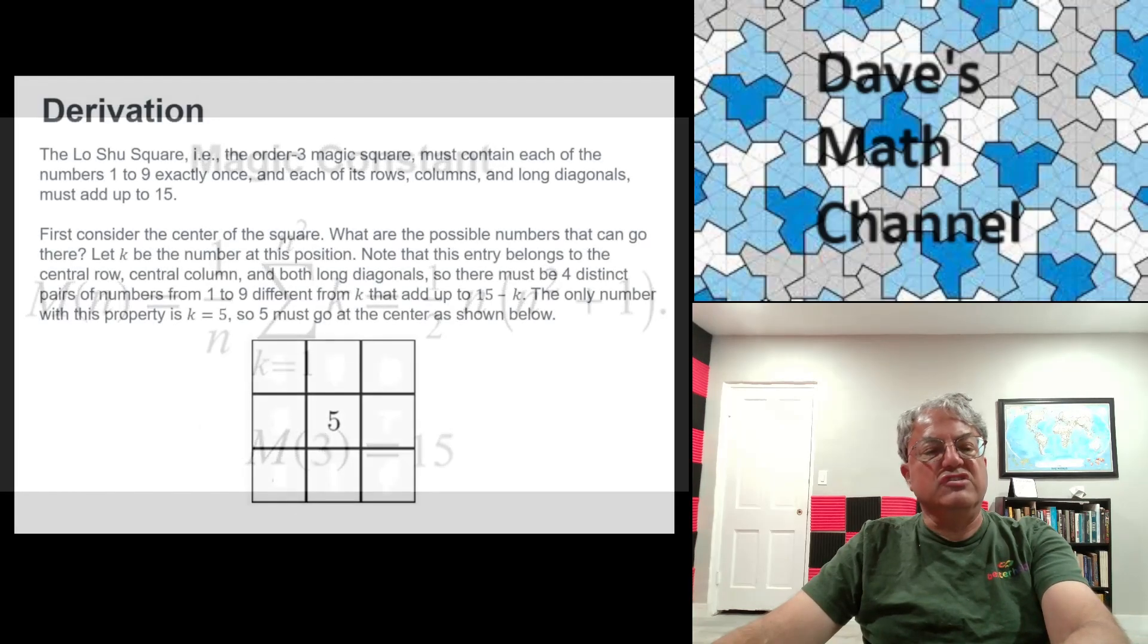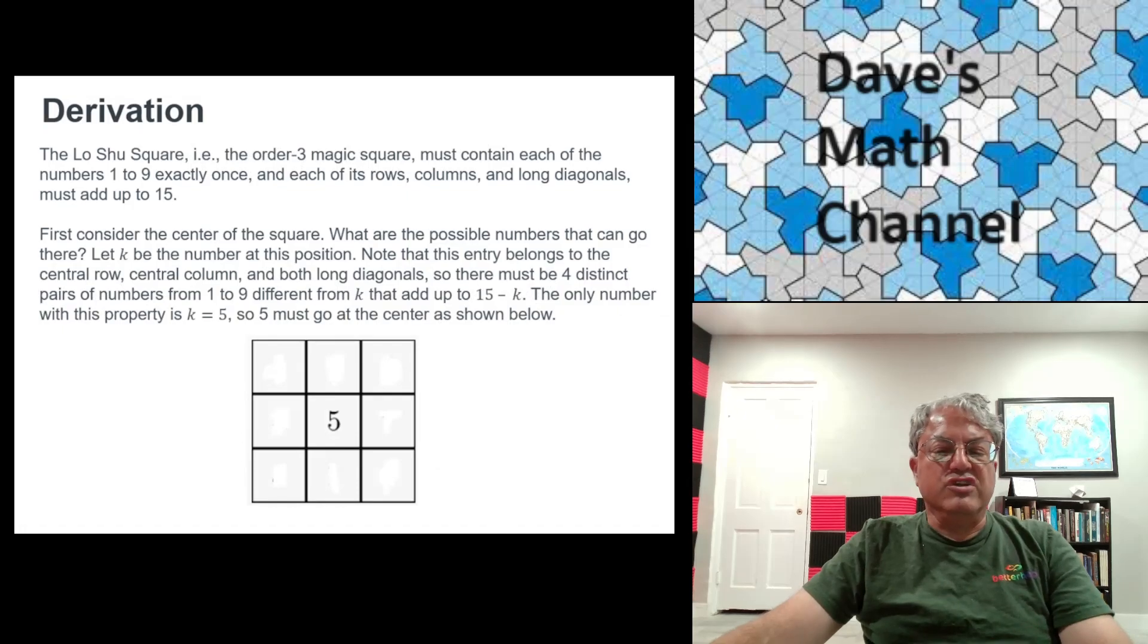So now I'm going to talk about how we can construct a Lo Shu Square. I'm going to construct it and show that it is unique. So what do we do first? Let's consider the number 5 first. I mean, 5 is right in the middle, so you might think that has some special significance.